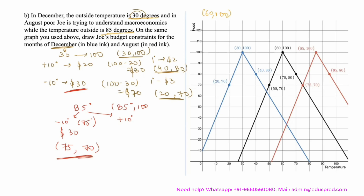Increasing the temperature by 10 degrees gives a temperature of 95 degrees. The cost is $20, giving the point (95, 80). These are the two additional points for August, and this is the red budget line for the month of August.